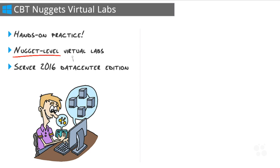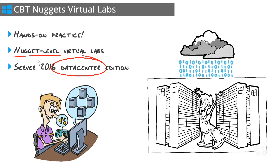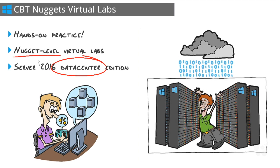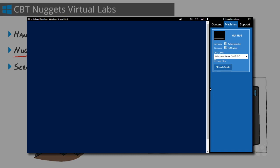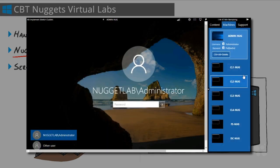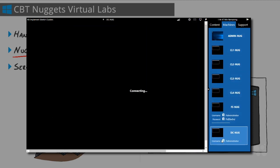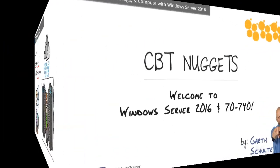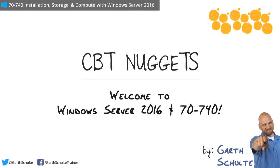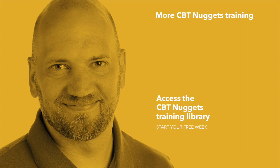Every single nugget in this course has its own virtual lab — we call them nugget-level virtual labs. It's helpful to have multiple monitors so you can watch on one and do the lab on another. Launch the virtual lab as soon as you land in a nugget, as it takes a minute or two to fire up. Every Server 2016 machine in the lab runs Data Center edition, since some advanced and newer features are only available there. We'll also use Windows 10 Enterprise as our client and remote administration machine. Labs grow more complex as the course progresses — starting with one or two machines and building toward remotely administering networks. Welcome to Server 2016 and 70-740!